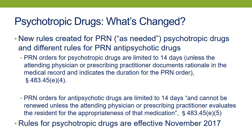The new rules for the first time also address PRN, or as-needed, psychotropic drugs, but the rules differ for antipsychotics and the other categories. For the three new categories, as-needed orders are limited to 14 days, although the physician can document in the medical record why a longer order is appropriate. For antipsychotic drugs, an order for more than 14 days of as-needed antipsychotics is appropriate only if the physician evaluates the resident. There's ongoing discussion about whether 'evaluation' means an in-person examination by the physician.